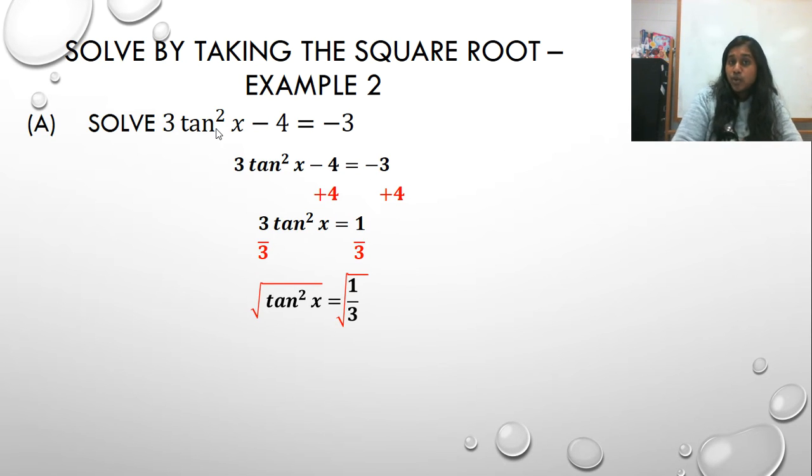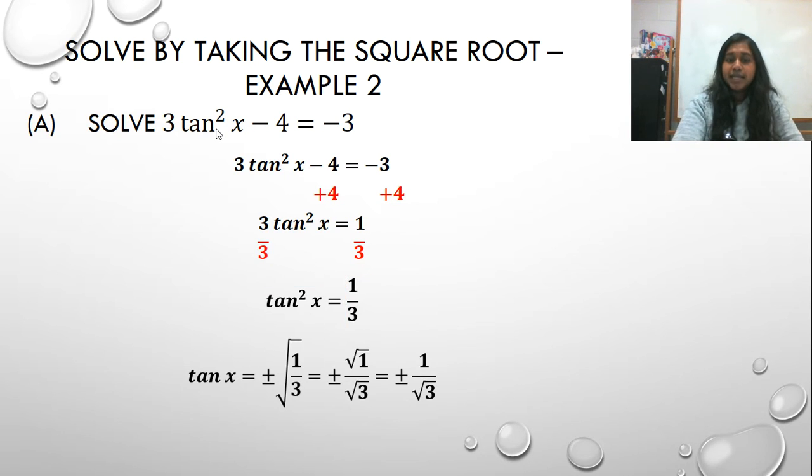So now when I square root, just recall, every time you square root or even root something, you need that plus or minus. So I end up with this, plus or minus one over the square root of three.